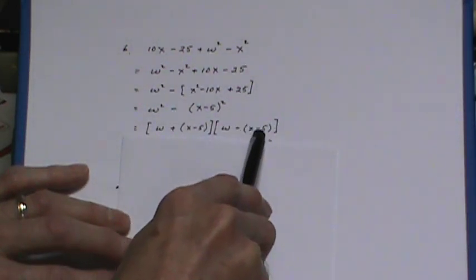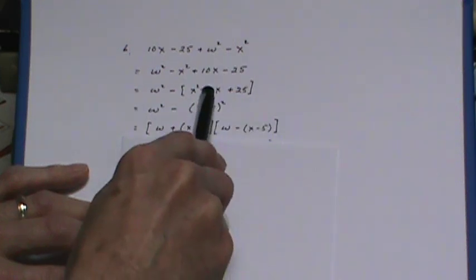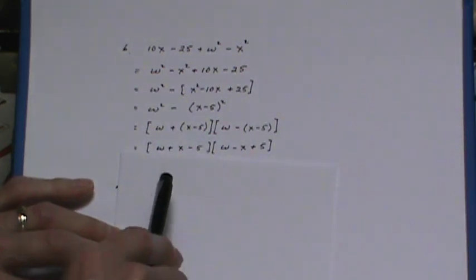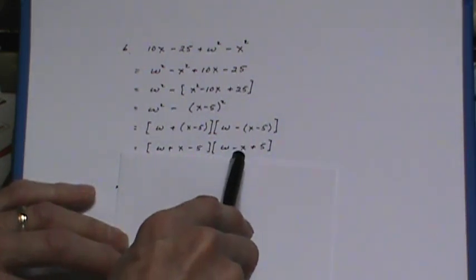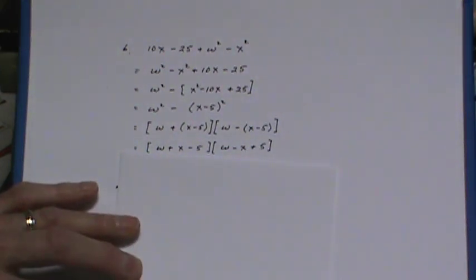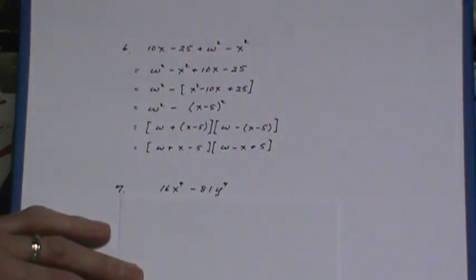Now this time because the bracketed term comes second you've got to watch when you remove the brackets. No changes here but in this case the minus comes in makes that a plus five.